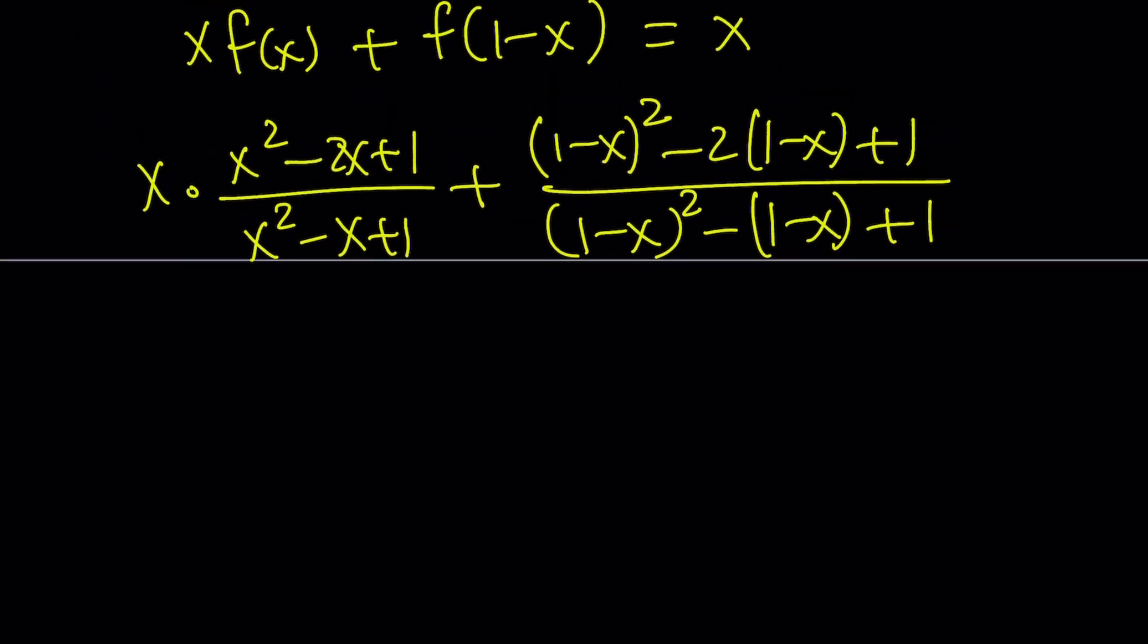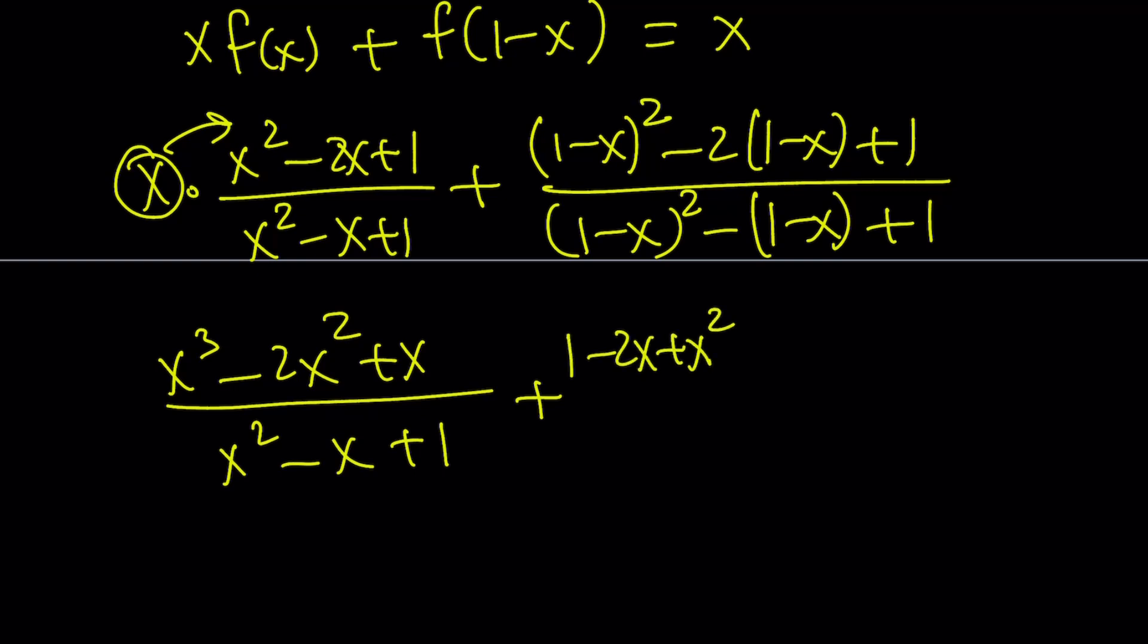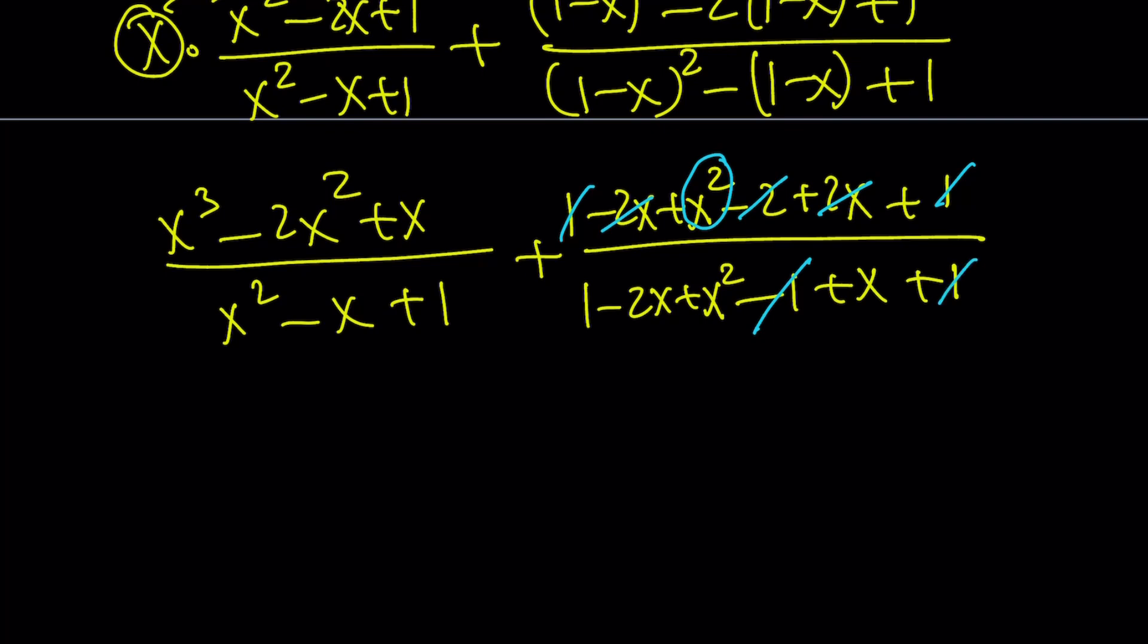Let's go ahead and simplify this. How do you simplify? Multiply the x by the numerator. Get x cubed minus 2x squared plus x. There's probably an easier way to do it, but just doing brute force here. The second part is going to become the following. 1 minus 2x plus x squared from the perfect square, minus 2 plus 2x plus 1. That is the top. The bottom is 1 minus 2x plus x squared again, but minus 1 plus x plus 1 this time. Let's go ahead and simplify this. How do we simplify that? Negative 2x and positive 2x cancels out. 1 plus 1 is equal to 2. 2 cancels out. That's crazy. We end up with a single x squared. That's really nice. Negative 1 and positive 1 cancels out. But guess what? That's actually a good thing. Because this gives us a common denominator. x squared in the numerator. And the bottom is going to be x squared minus x plus 1.